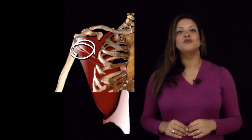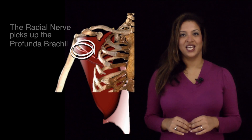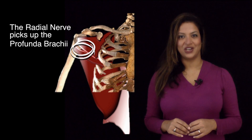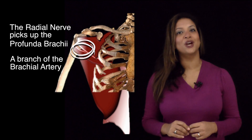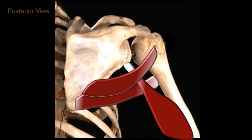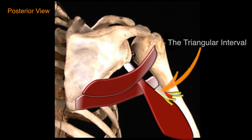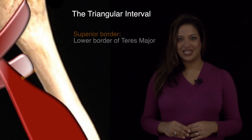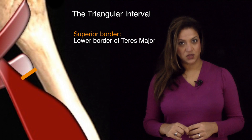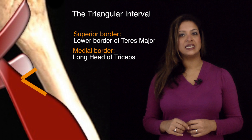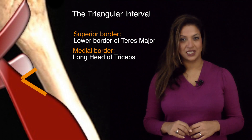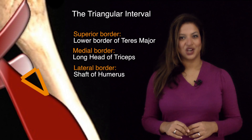At this level the radial nerve picks up a friend — the profunda brachii, which is a branch of the brachial artery. These two structures pass behind into the posterior compartment of the arm by traversing through the triangular interval. The triangular interval has three boundaries: superiorly the lower border of teres major, medially the long head of triceps, and laterally the shaft of the humerus.